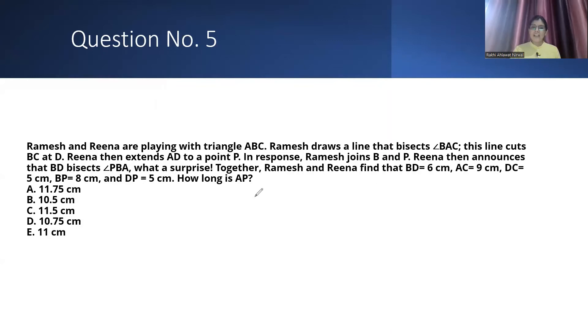Ramesh and Reena are playing with triangle ABC. Ramesh draws a line that bisects angle BAC. This line cuts BC at D. Reena then extends AD to a point P. In response, Ramesh joins B and P. Reena then announces that BD bisects angle PBA. If this angle is theta, then this angle is also theta. Together, Ramesh and Reena find that BD=6 cm, AC=9 cm, DC=5 cm, and BP=8 cm. How long is AP?